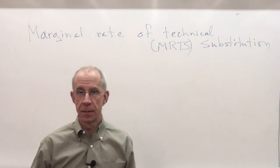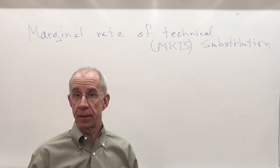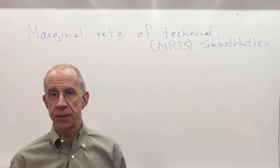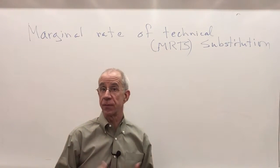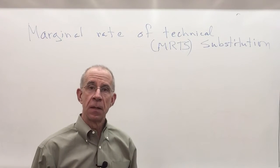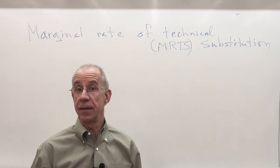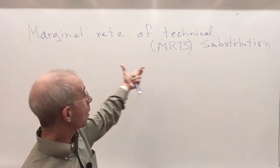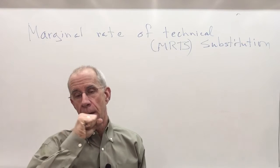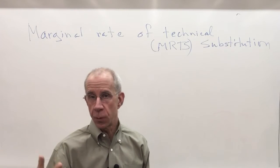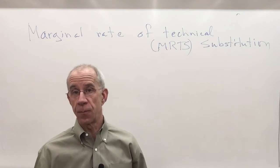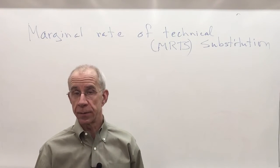Concept in production theory is the marginal rate of technical substitution. Now this is basically the production side analog to a marginal rate of substitution, which if you recall was the slope of an indifference curve.